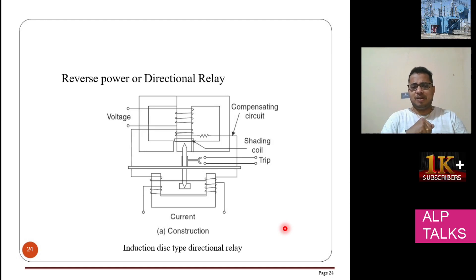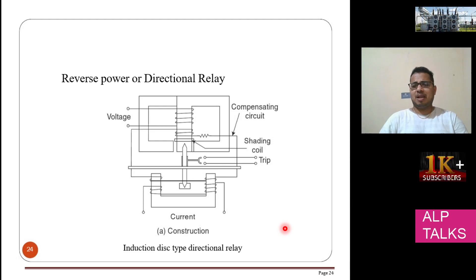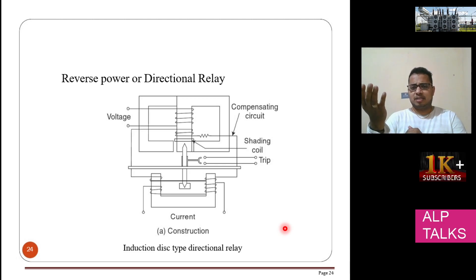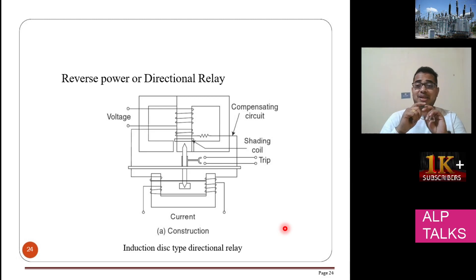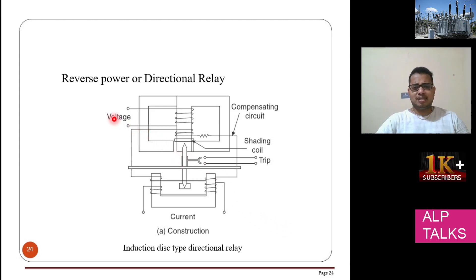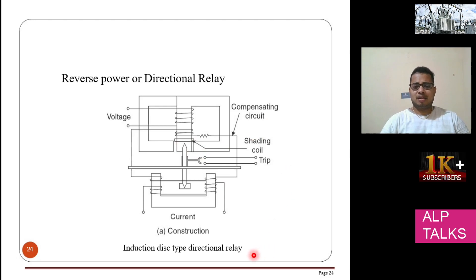There are some mechanical relays used when current can flow from one direction or the other, or when power flows in reverse direction. This generally happens when, for example, a generator gives supply to the grid, and when the generator has some issue, it takes power from the grid — causing reverse power flow. In that case, a reverse power or directional relay should be used to block the reverse flow. For a directional relay, voltage and current are combined. A shading coil and compensating circuit are used, along with a trip command output.